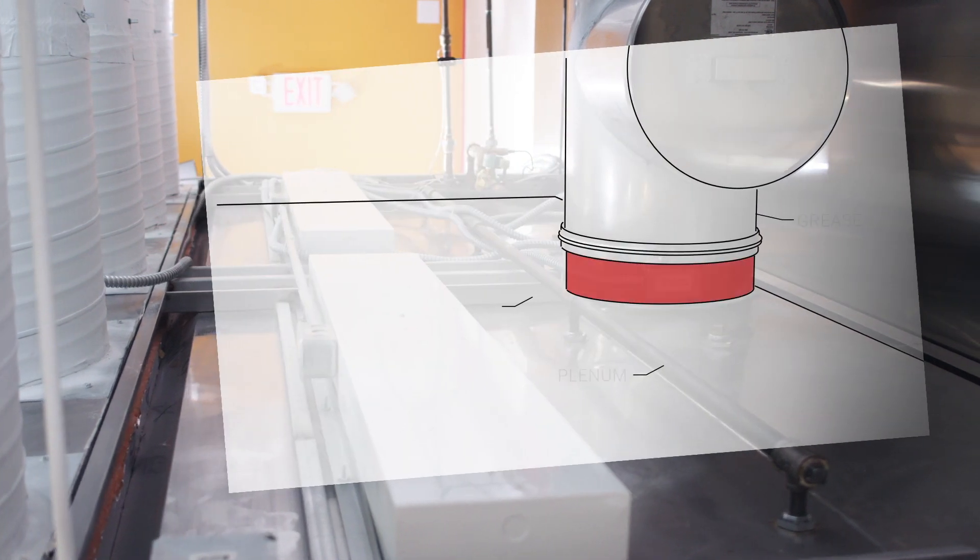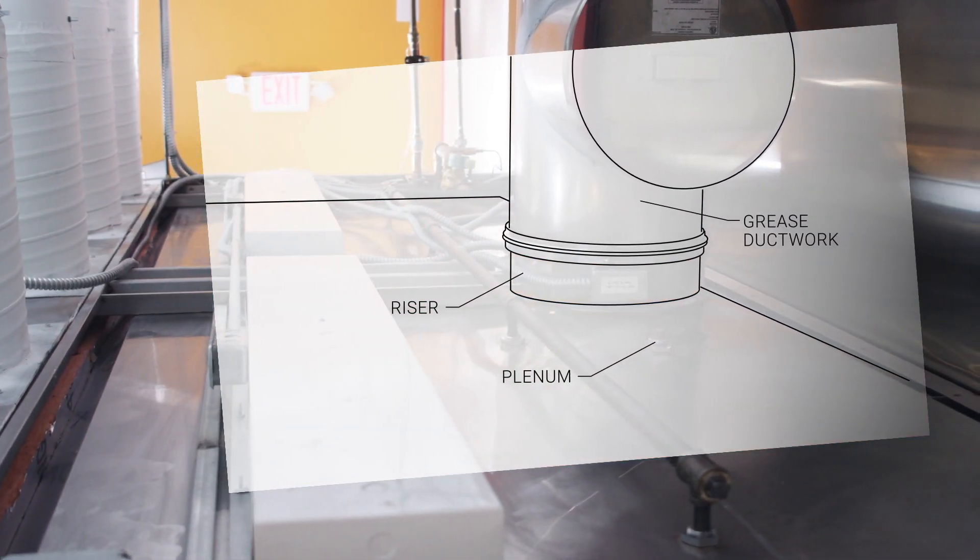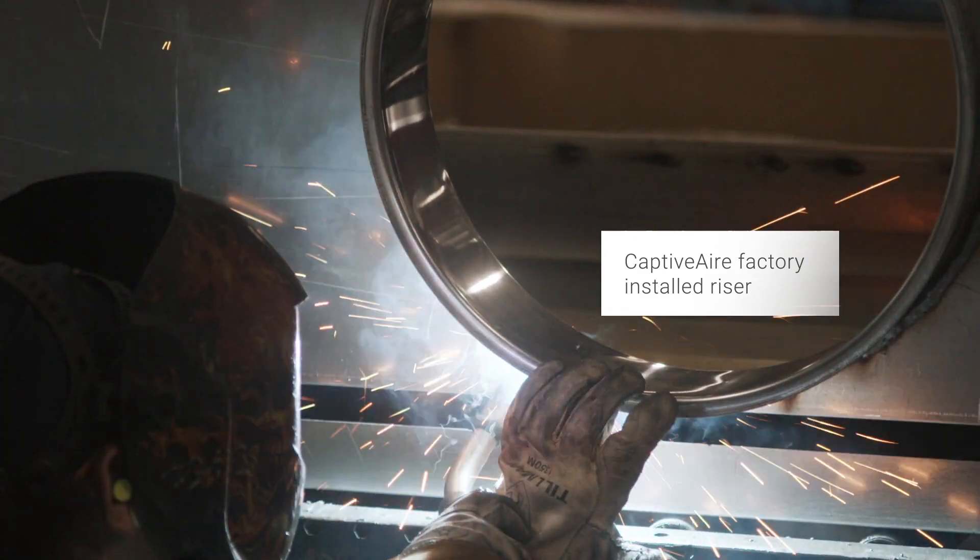The riser is simply the piece that connects the hood plenum to the grease ductwork. Your hood is likely to come with a factory installed riser. However, if the riser is field installed, it will ship loose.